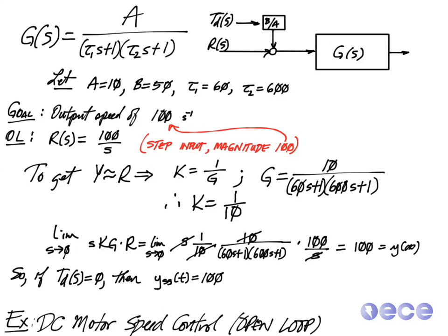So for TD of S equal to 0, then my steady state value for Y is 100 radians per second, which was my output goal. So that tells me that for a zero disturbance, the system seems to behave pretty well.